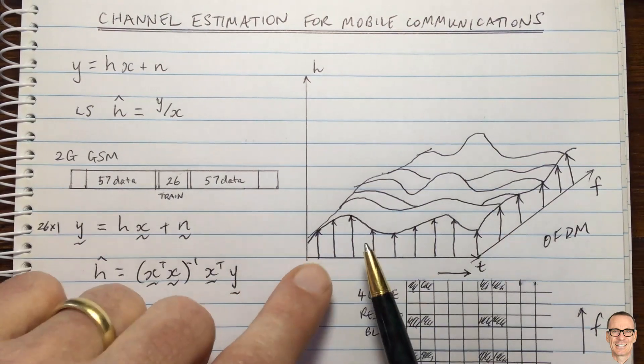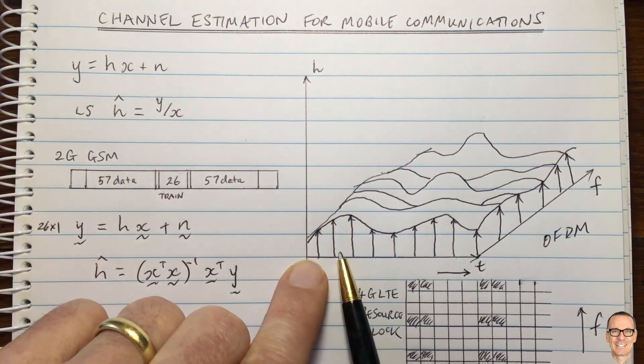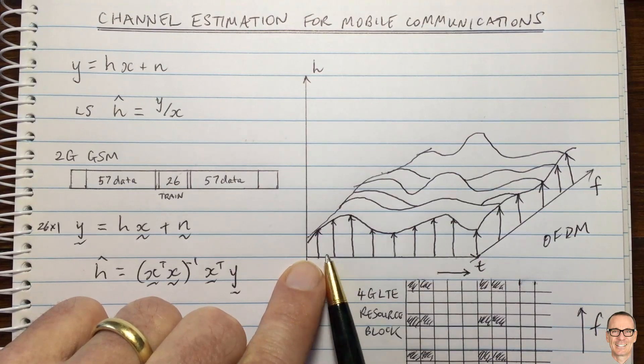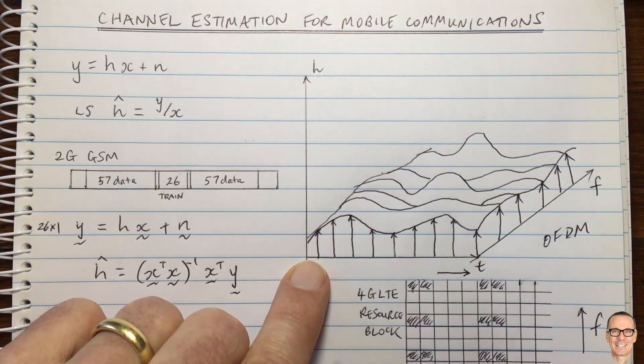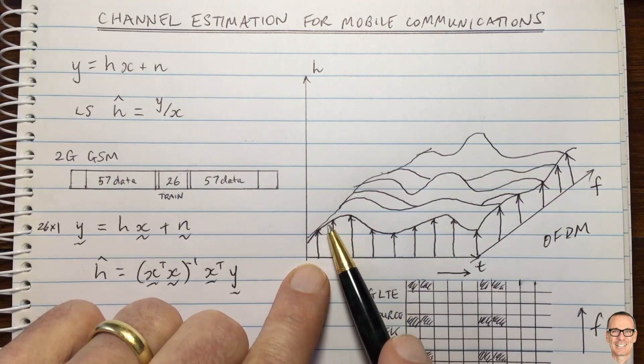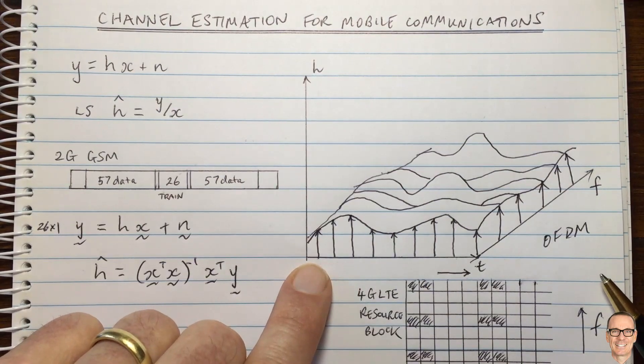Another thing to point out is that you could do a decision-directed approach as well. If the channel is quite good and there's not much noise, then if you're doing a good job of detecting your data in between these samples, then the data could also be used in a decision-directed mode to add extra points in here for the interpolation. So that would be called decision-directed approach.